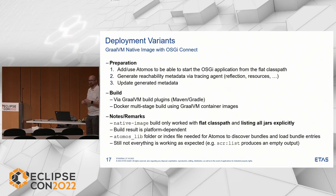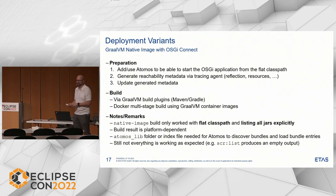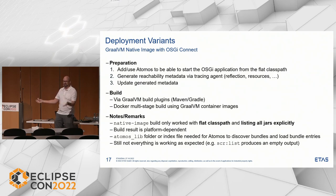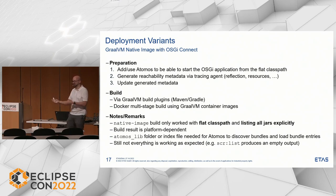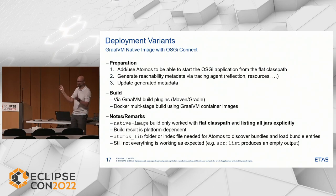Some remarks that were a struggle for a while: the native image build only works with a flat class path by listing all JARs explicitly. It says it works with modules — I tried with modules, got strange errors that weren't really speaking errors. Then I thought, okay, creating a native image — it doesn't matter if it's module path or class path, it's the result that matters. With a class path using a folder I still got strange errors; using folder with an asterisk still didn't work. The only thing that really worked was the class path listing every JAR explicitly, which can be done with shell scripting.